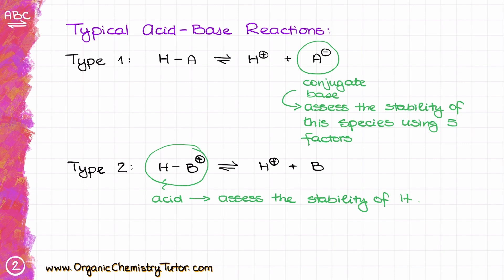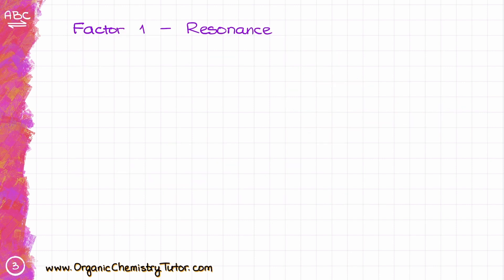For Type 2, the same five factors apply but generally in the opposite direction — if something is good for Type 1, it's going to be bad for Type 2. Type 2 acidity will be heavily discussed when we cover amines. For now, let's look at the factors that determine the stability of our conjugate base. The first factor is resonance.